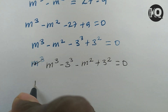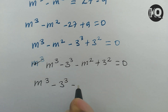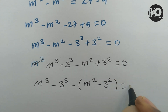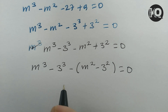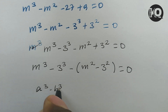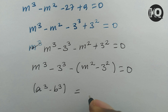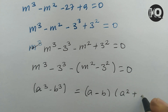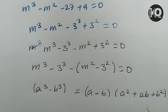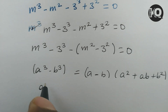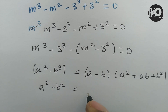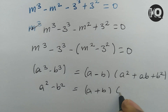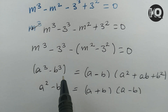This can be rewritten by grouping: (m cubed minus 3 cubed) minus (m squared minus 3 squared) equals 0. From basic algebra, a cubed minus b cubed equals (a minus b)(a squared plus ab plus b squared), and a squared minus b squared equals (a plus b)(a minus b).